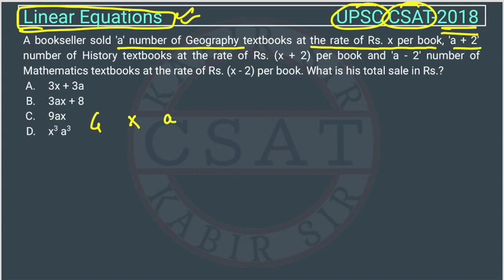Now a plus 2 number of history textbooks - for history how many textbooks he is selling, a plus 2, at the rate of x plus 2 per book, and a minus 2 number of mathematics textbooks.